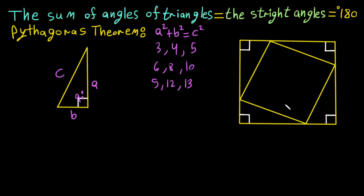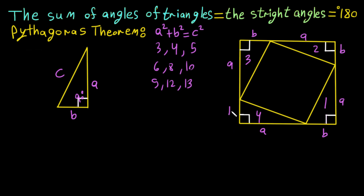Let's say we have four copies of this right triangle. We place the first one here, then rotate and place the second one here, then rotate again and place the third, and once more for the fourth. Now we have four triangles arranged inside a square shape. The hypotenuse — opposite the 90° angle — is labeled c, and the two legs are labeled a and b on each triangle.